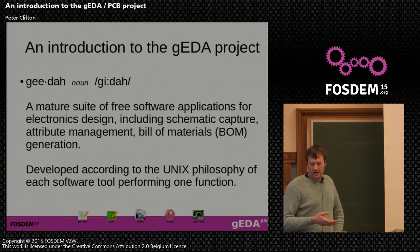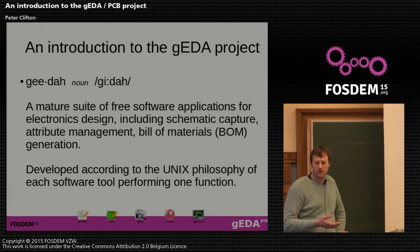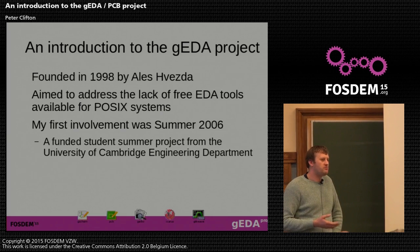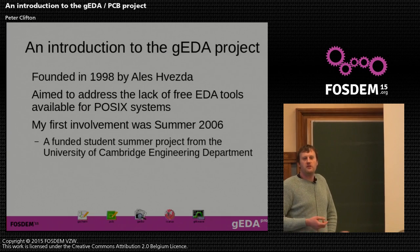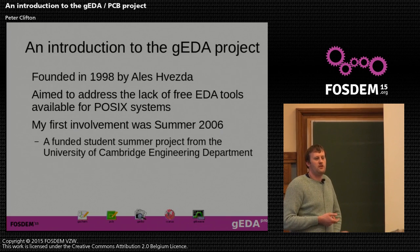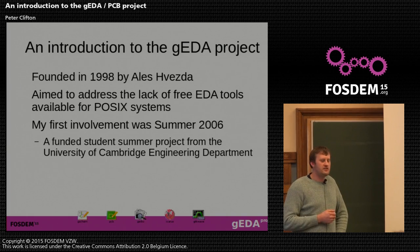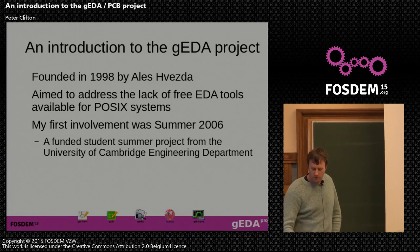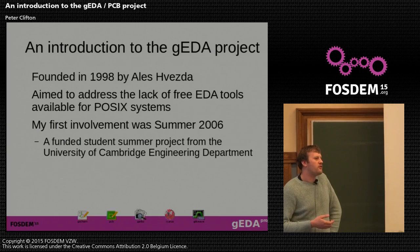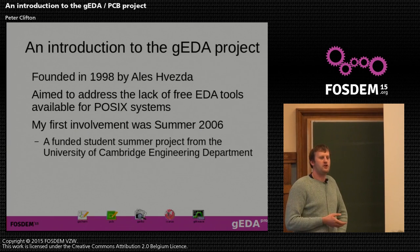The project was aimed to address the lack of free and open source tools in the electronics arena. Alish Hvezda wanted to do electronics on a Linux/POSIX platform and when he looked around there weren't any tools to do that, so he started writing it. My first involvement actually writing code for the project was in 2006, funded through a project at the University of Cambridge to improve tools for running student robotics projects.